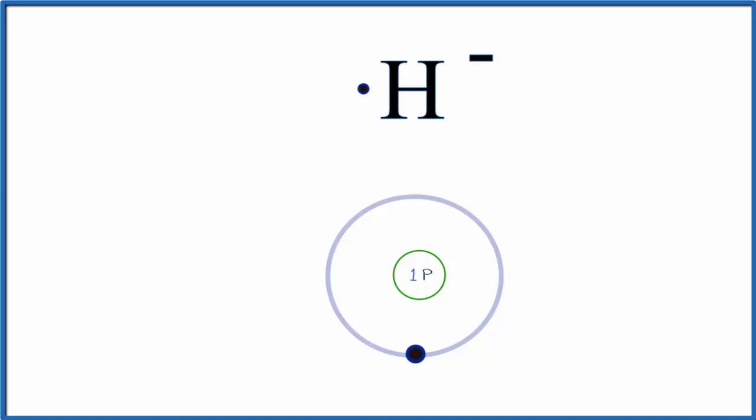We should put another electron here in our Lewis structure and in our Bohr diagram. Now we can see that first energy level with the hydrogen, it has two valence electrons. Our Lewis structure has two valence electrons as well.